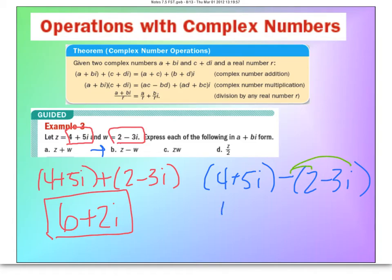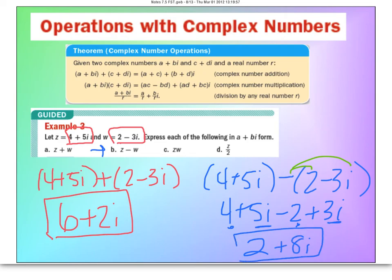When we simplify it, it will be 4 plus 5i minus 2 plus 3i. Then like adding, you just combine your like terms. So 4 minus 2 is 2, 5i plus 3i is 8i. And write it in complex format.